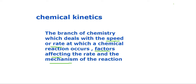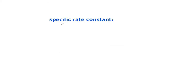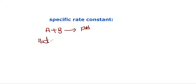Now coming to some basic definitions of chemical kinetics. Let us suppose we have a reaction in which A reacts with B to give us products. There are two chemicals, A and B, which react to give a product. If we want to find the rate, it means we want to see how fast this reaction is happening. The rate is equal to minus delta concentration of A divided by delta T. This little triangle symbol means 'change'.